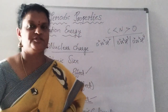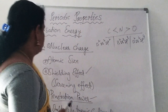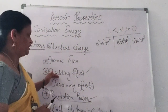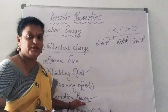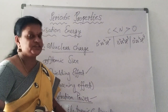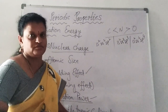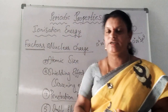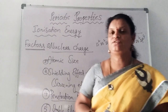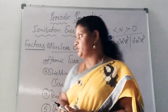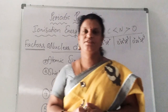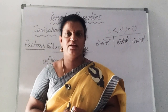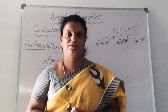So these are the factors affecting ionization energy: nuclear charge, atomic size, shielding effect or screening effect, penetration power, and stable electronic configuration. If any element has a stable electronic configuration, the energy required to remove the electron from the outermost shell is also more. Thank you for watching. Please like, comment, and share my videos. Thank you.